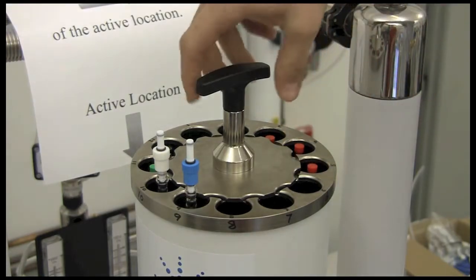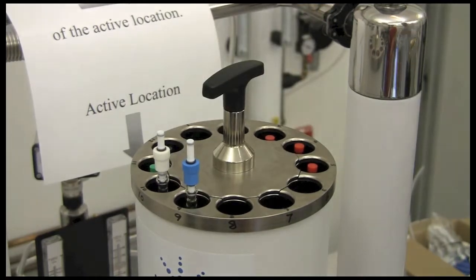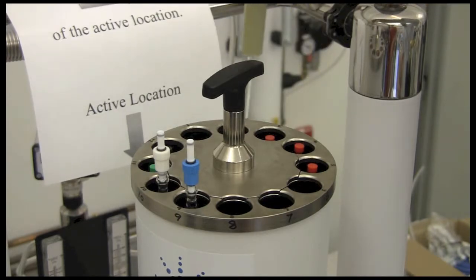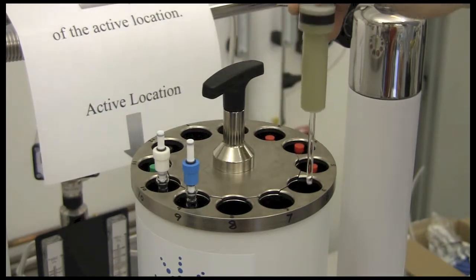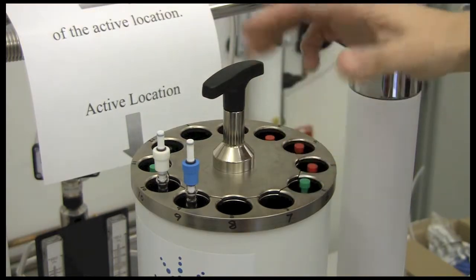In order to load your sample, you need to turn the handle counterclockwise to put it in the unlocked position. Then you need to find a location to the right of the active location, so in this case location number 6, to put your sample. You can just drop it in there.